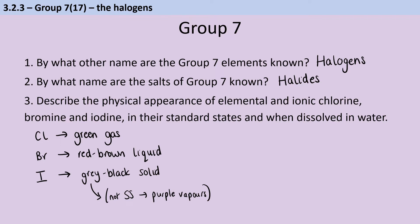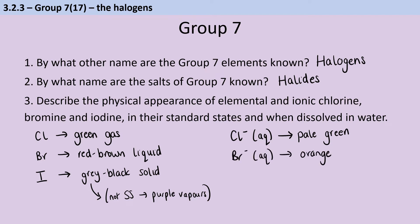When each of these dissolves in water — chloride ions in water, what we call chlorine water — it just looks very, very pale green. But for bromine and iodine, we see an orange solution.